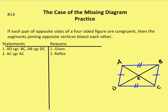Problem number 13: if each pair of opposite sides of a four-sided figure are congruent, and the segments joining the opposite vertices bisect each other. Again, we have to draw the figure. If each pair of opposite sides are congruent — AB and DC are congruent, AD and BC are congruent — and the segments joining opposite vertices AC and DB bisect each other.